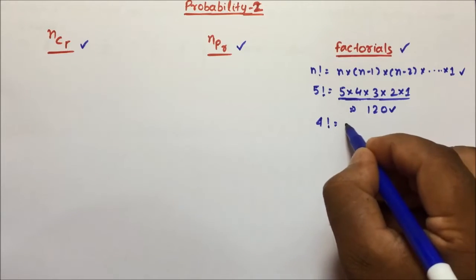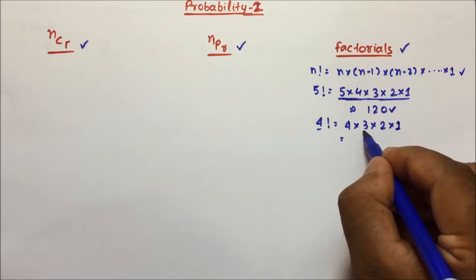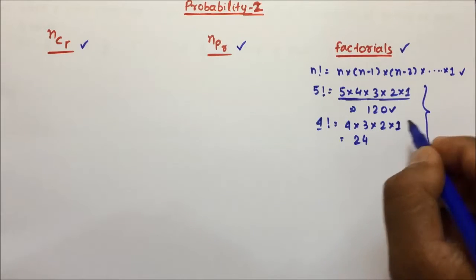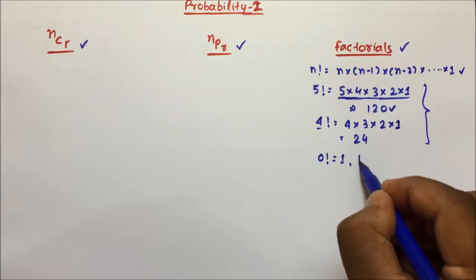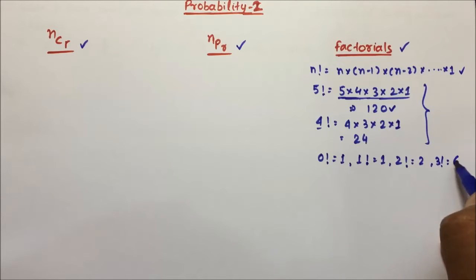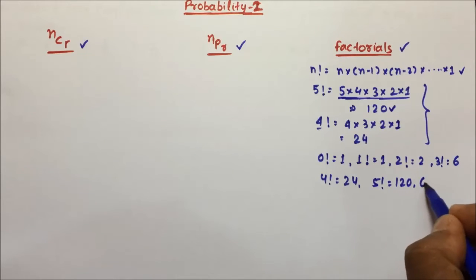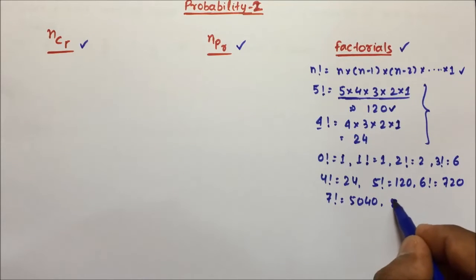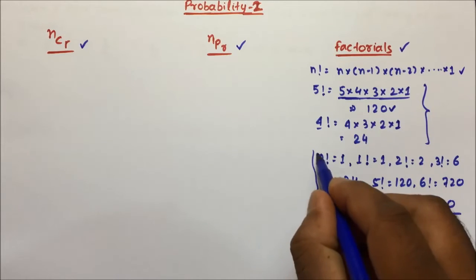Suppose if I ask you to calculate 4 factorial, then you start with 4 and keep reducing by 1: 4 into 3 into 2 into 1. So 4 into 3 is 12, 12 into 2 is 24. So 4 factorial equals 24. Now I am going to write a few factorials which we have to remember: 0 factorial equals 1, 1 factorial equals 1, 2 factorial equals 2, 3 factorial equals 6, 4 factorial equals 24, 5 factorial equals 120, 6 factorial equals 720, 7 factorial equals 5040, and 8 factorial equals 40320.